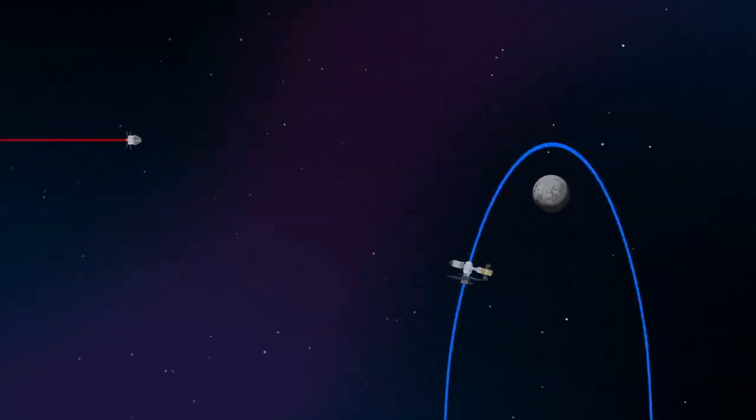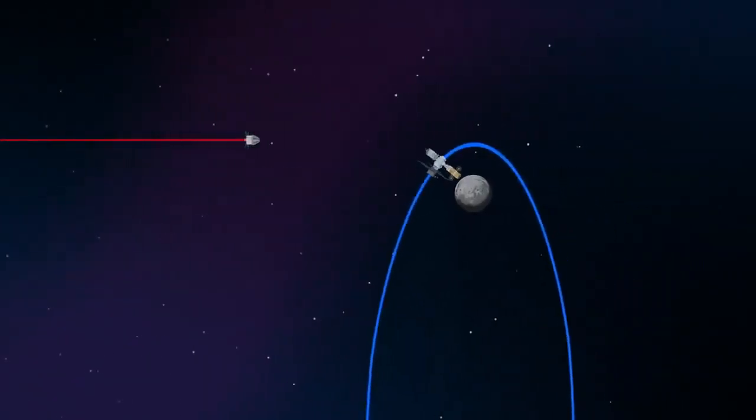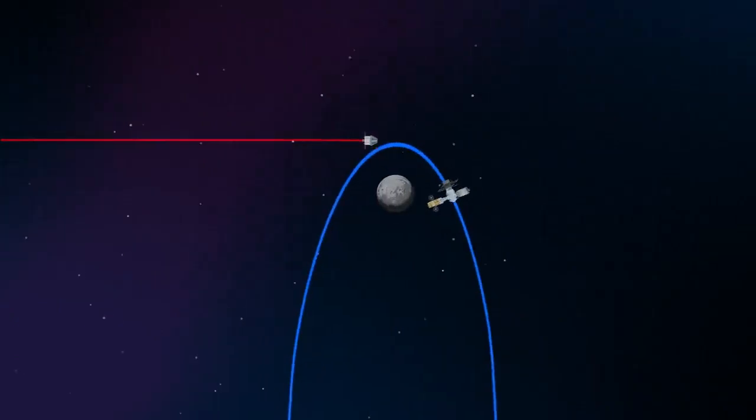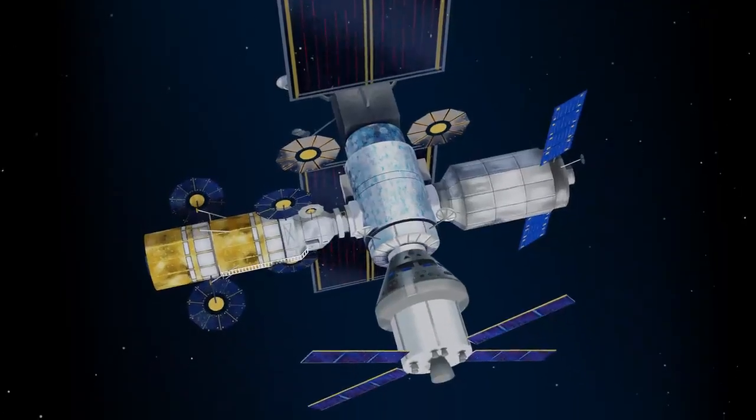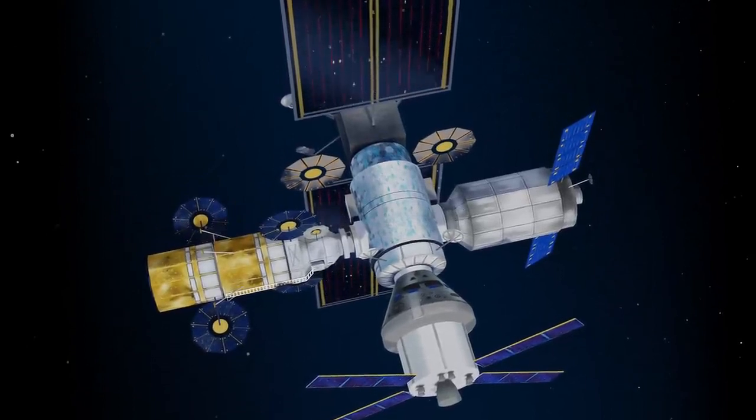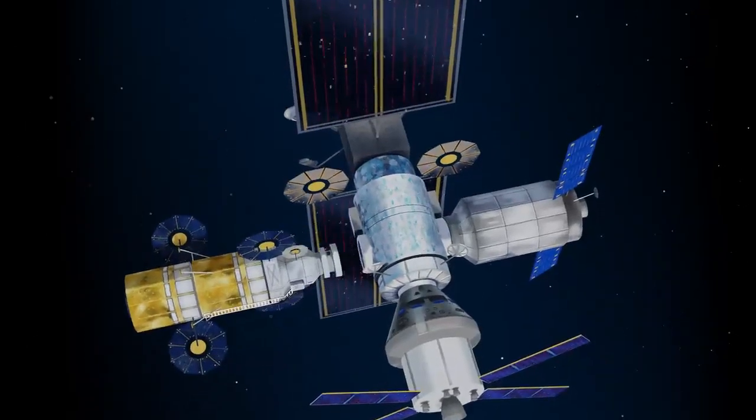Returning to our crew as they approach Gateway, the Orion must match the elliptical orbit of the station in order to successfully dock. Once on board, pre-selected crew members transfer to the lunar lander, while those assigned to Gateway remain on station.